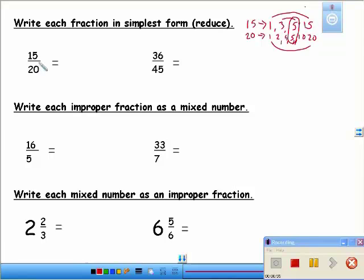Which means I need to divide both the top and the bottom, because remember we know that you can do anything you want to the numerator as long as you do the same thing to the denominator. So 15 divided by 5 is 3, and 20 divided by 5 is 4. So 15/20, which is kind of an ugly fraction, can be reduced to 3/4, which is a much more attractive fraction.